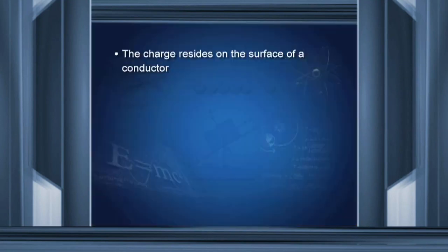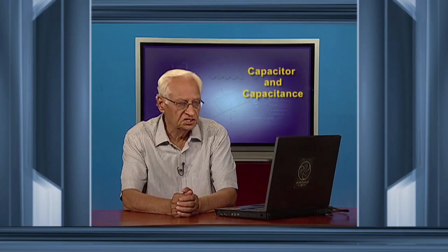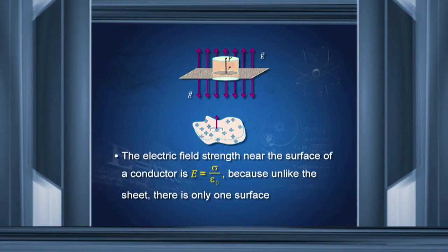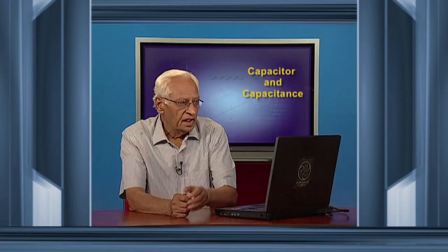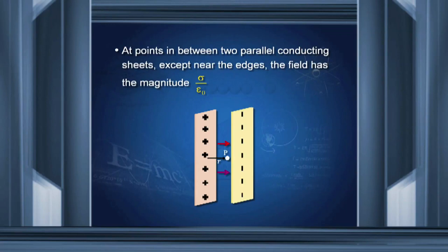We have already learned that charge resides on the surface of a conductor. The electric field strength near an infinite charge sheet is sigma by 2 epsilon-0, where sigma is the charge density — charge per unit area on the sheet. The electric field strength near the surface of a conductor is sigma by epsilon-0 because unlike the sheet, which has two surfaces, the conductor has just one surface. At points between two parallel conducting sheets, except near the edges, the field has magnitude sigma by epsilon-0.